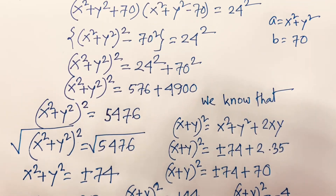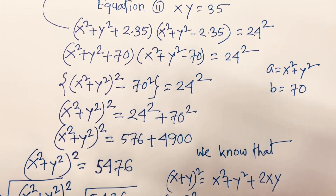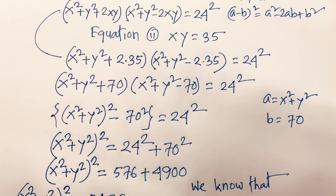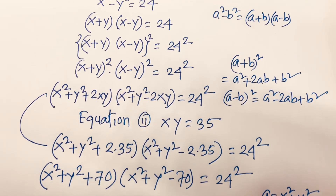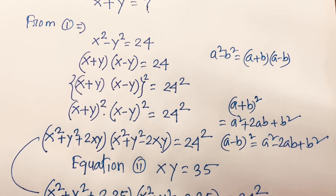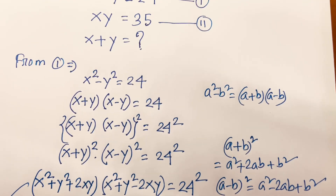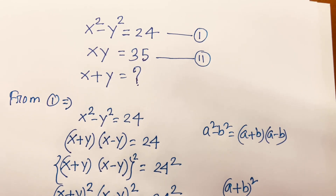So the final answers are x plus y equals plus or minus 12, and x plus y equals plus or minus 2i. Thank you all. If you enjoyed this video, please subscribe to my channel and like this video. Goodbye, thanks for watching, see you next time.